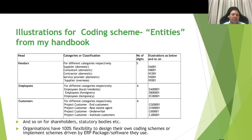Likewise, we can have many other business entities besides vendors, employees and customers — for example, shareholders, investors, statutory bodies, etcetera. Organizations have 100% flexibility to design their own coding schemes, which could be of any number of digits. They could be alphanumeric, alpha only, or even all numeric.